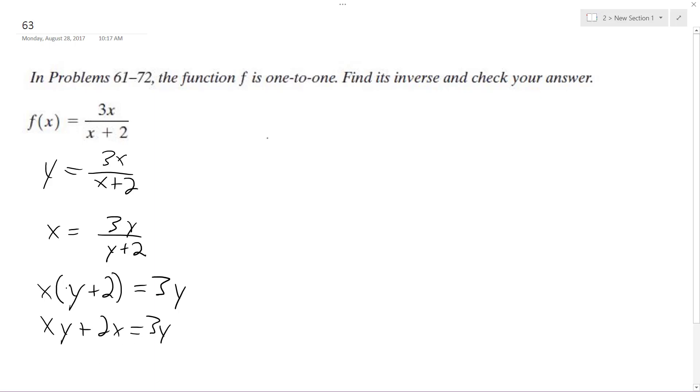Now what I'm going to do is I'm going to move over the y, so I get 2x is equal to 3y minus xy. So then I'm going to factor out a y, so y times 3 minus x equals 2x. I just flip those around, and then y finally is equal to 2x over 3 minus x.